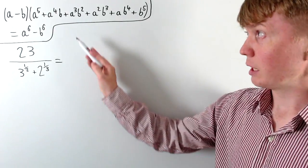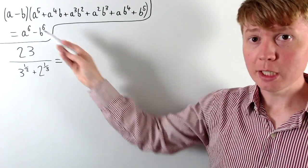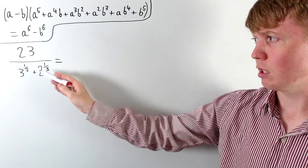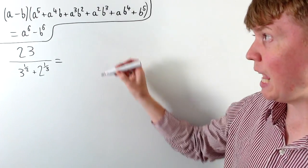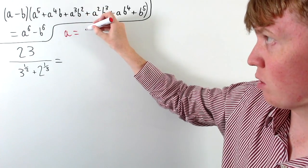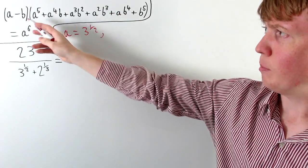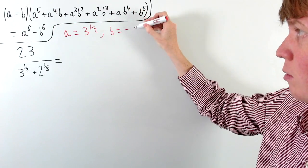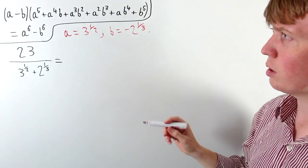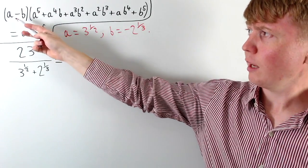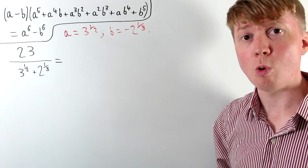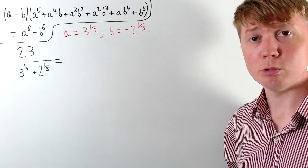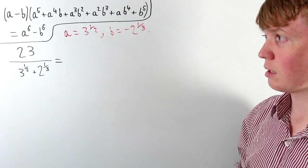We need to multiply by this polynomial where a minus b corresponds to root 3 plus the cube root of 2, written as 3 to the half plus 2 to the one third. So a is root 3, or 3 to the power of one half. The minus b term corresponds to positive 2 to the one third, so b is actually negative 2 to the one third. At this point you could take out a factor of a plus b instead — that also works — but we'll proceed with the negative value of b.